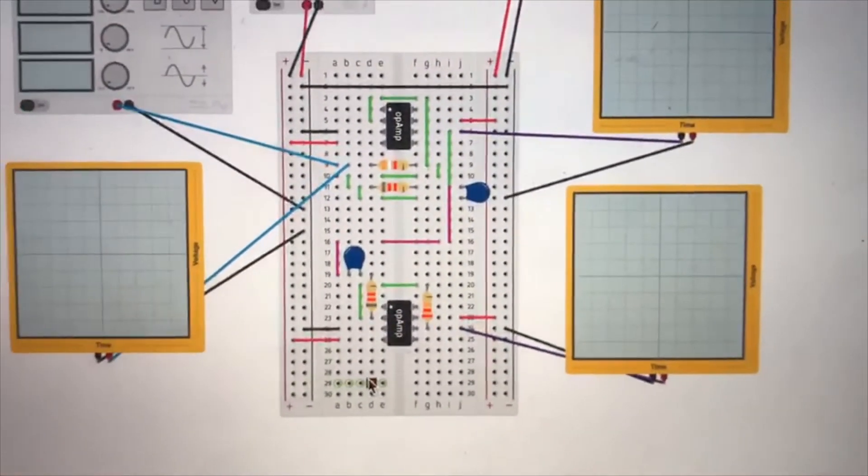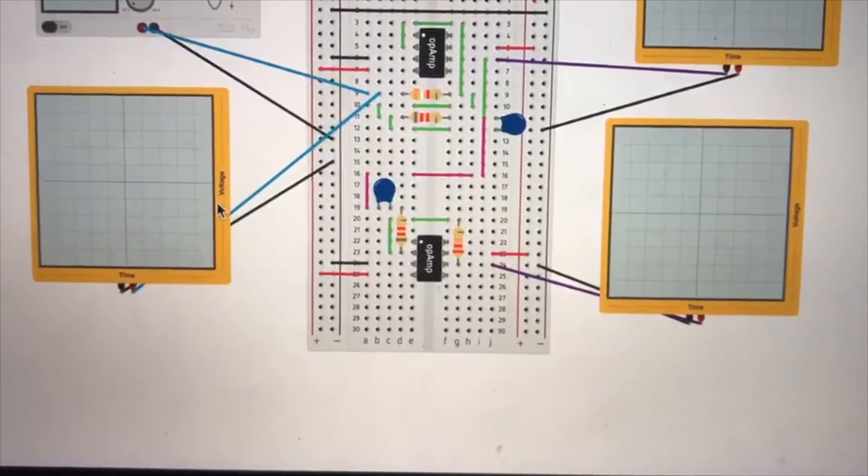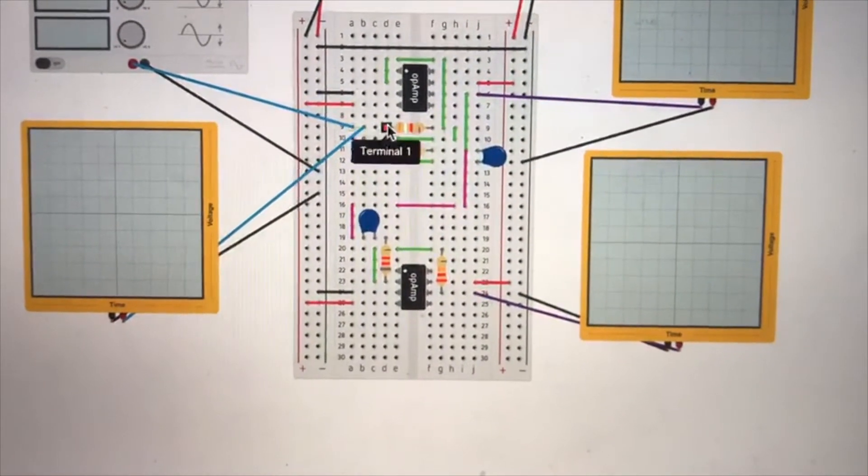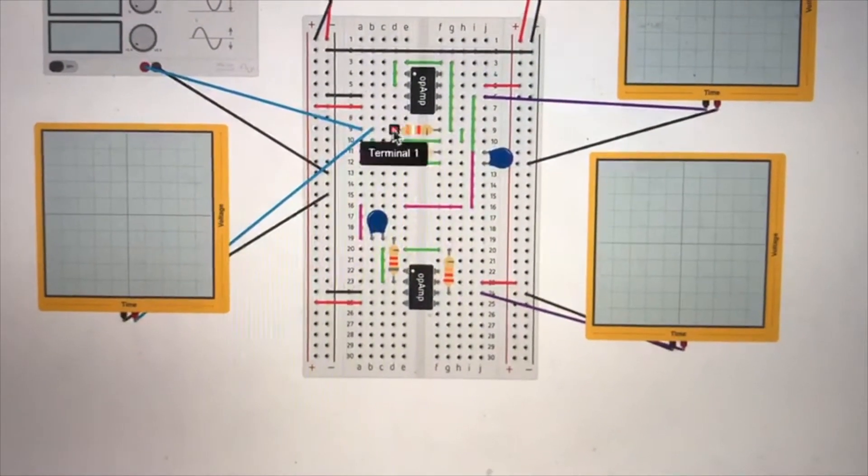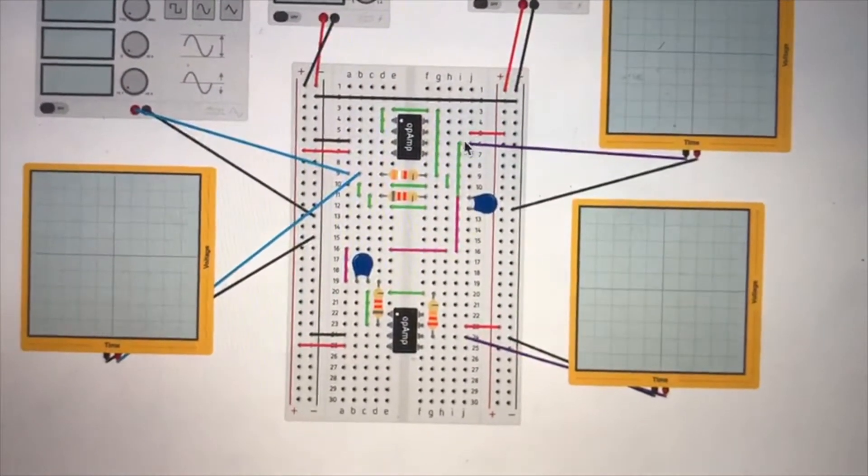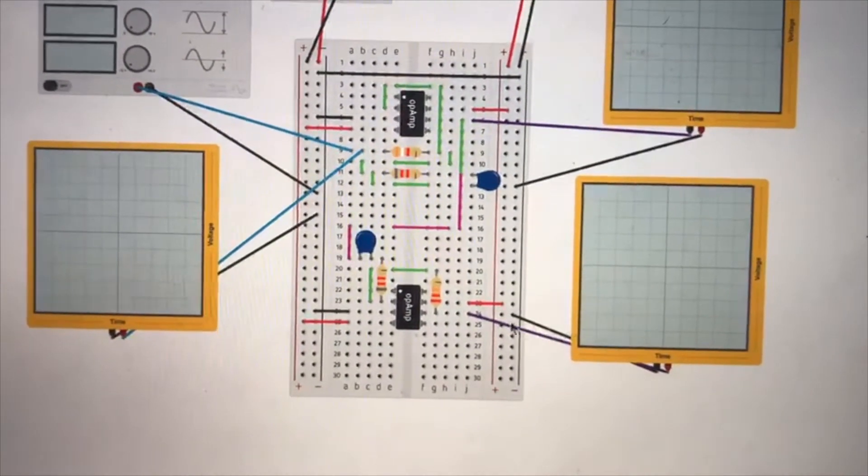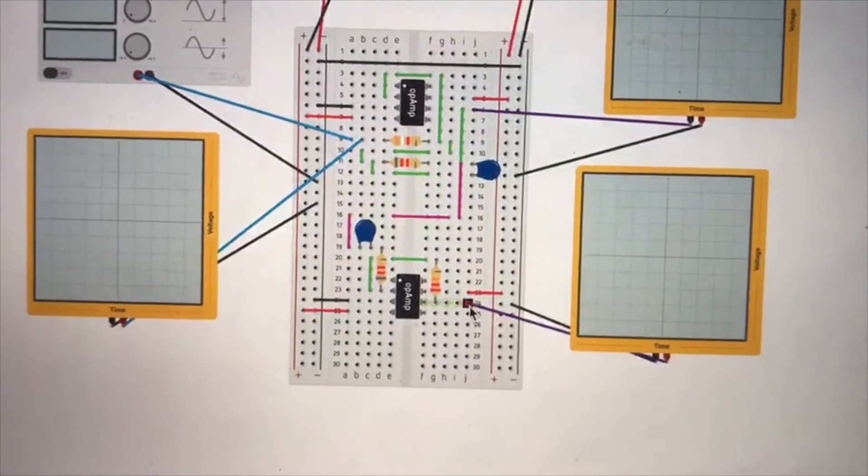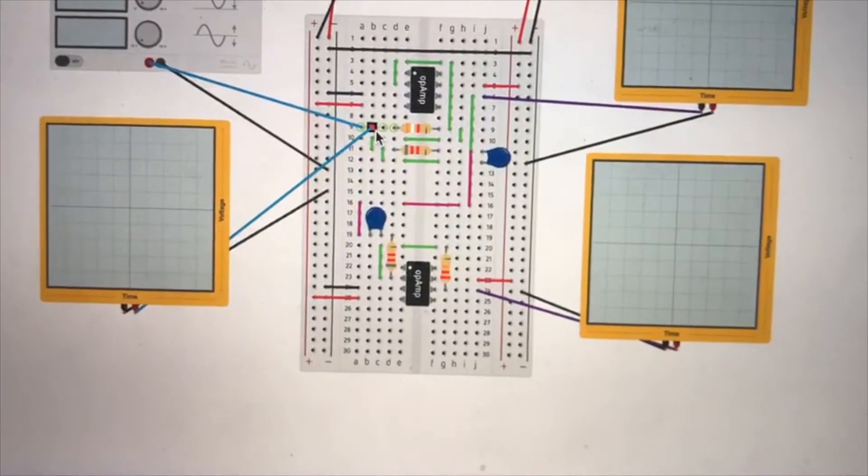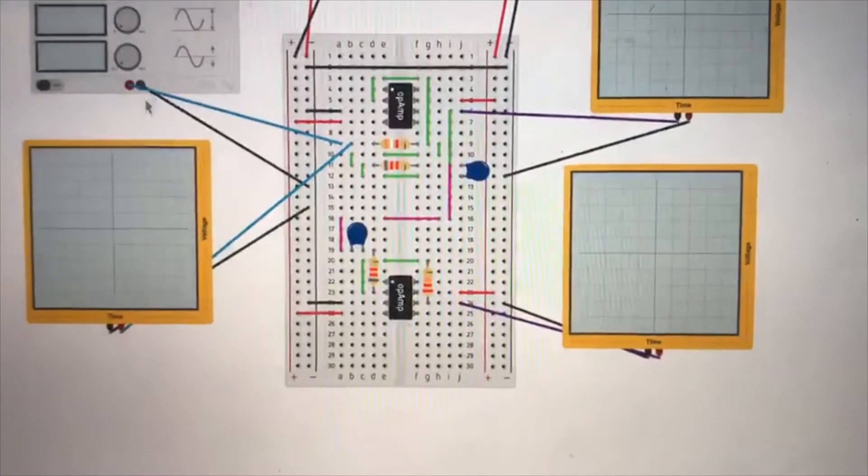Here I have my function generator. The signal input is connected here to R1 in the lowpass filter. This oscilloscope is measuring the output of the lowpass, this oscilloscope is measuring the final output at the end of the bandpass, and this oscilloscope is measuring just the input. We know what it is because we're generating it, but just so we can visualize it.